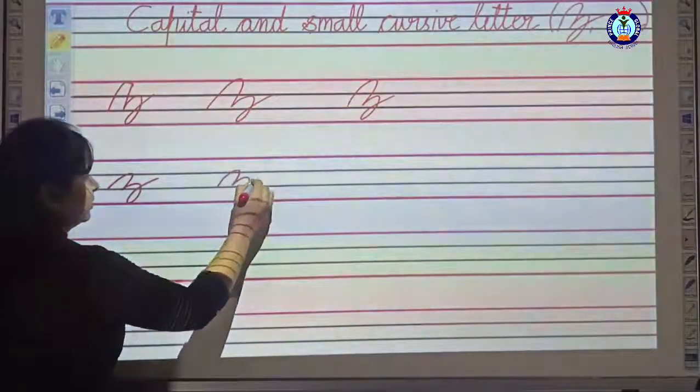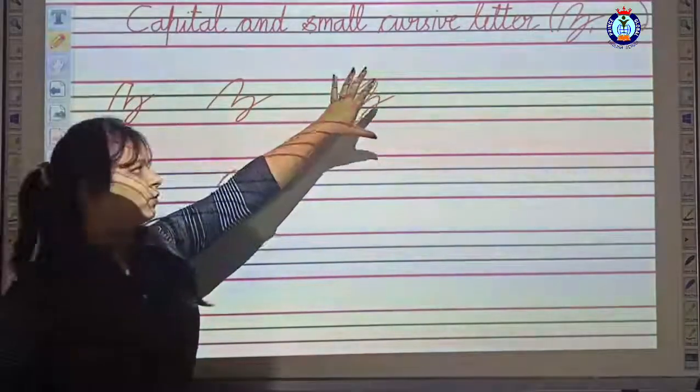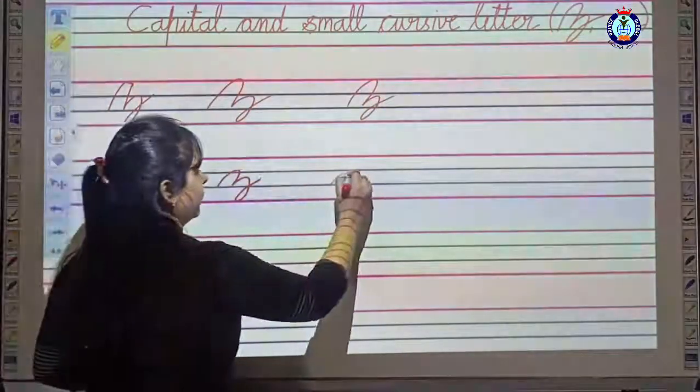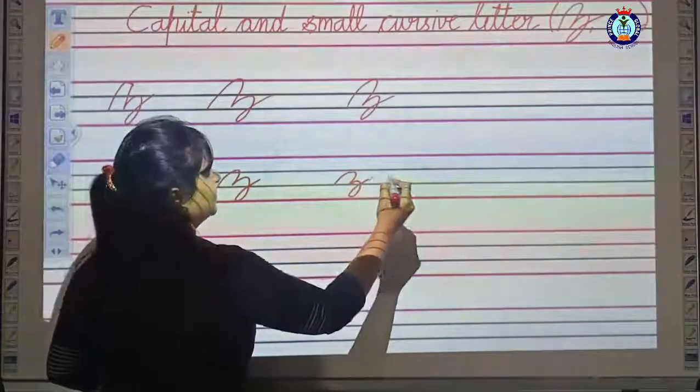Small letter Z. Lines ka dihaan rakhye ga. Capital four lines mee banye ga. Small ka dihaan rakhye ga. Small letter Z.